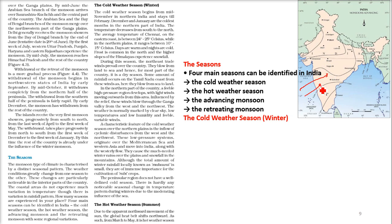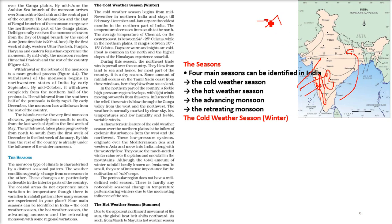These are the monsoon winds. When this monsoon wind reaches here, there is a ghat — we call it the Western Ghat. So most of these places get a lot of rain. But this region does not get a lot of rain because these are the mountains, and because of orographic precipitation the rain happens here, and this place remains relatively waterless.